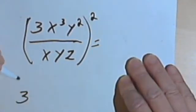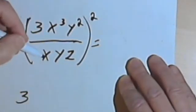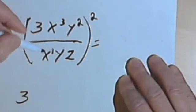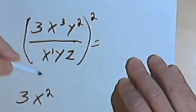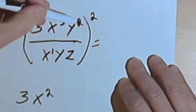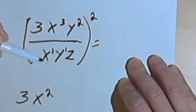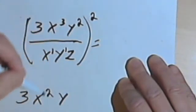The 3 will remain the same, but I've got x to the third over x, so that's like x to the first down here. I'm going to subtract this one from this 3, and I'll get x squared. I've got y squared over y, or y to the first, so that means I'll just have a y in the numerator.